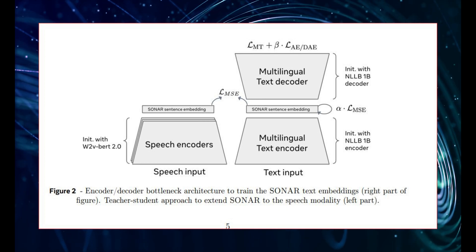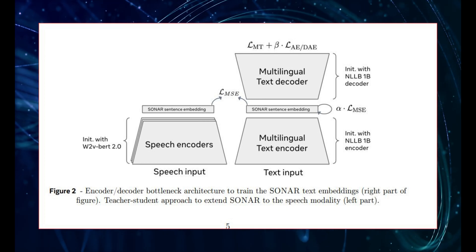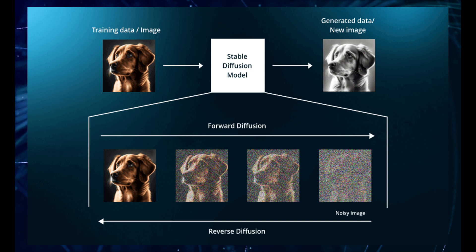But the ones that seem to work the best were based on this idea called diffusion. Now, diffusion is kind of like, imagine you're gradually adding noise to something. Like, imagine taking a picture and making it more and more blurry until you can't even tell what it is anymore. And then, you learn to reverse that process. You learn to reconstruct the original clear picture from the blurry, noisy one. That's kind of what diffusion is about.